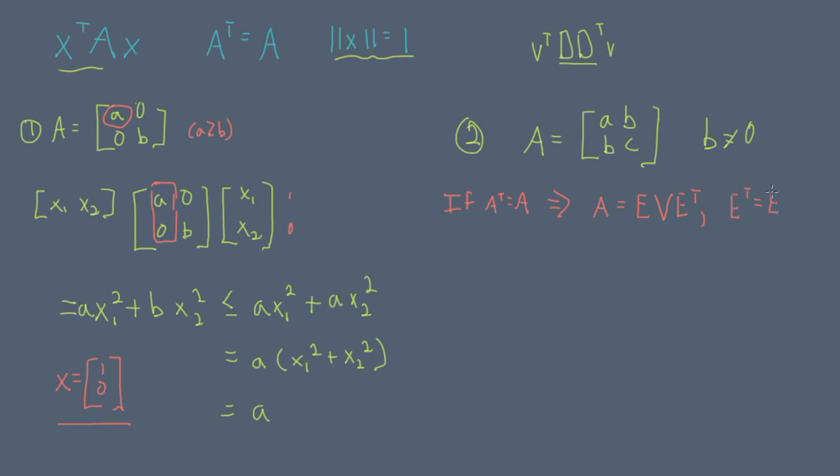Furthermore, E transpose equals E inverse, and V is a diagonal matrix. If we allow these propositions, we can directly substitute E V E transpose for A in the quadratic form.